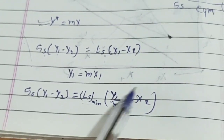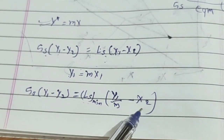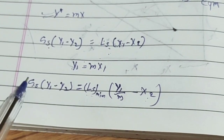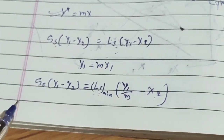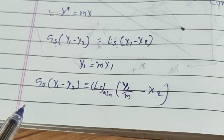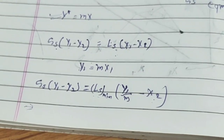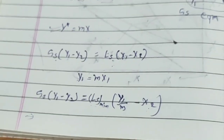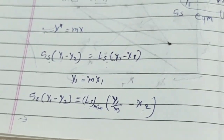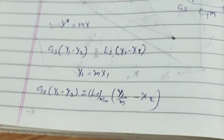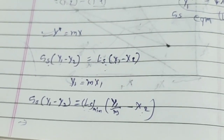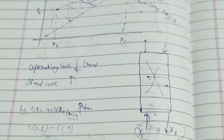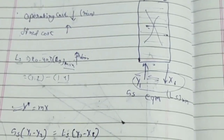Using that relationship you can find LS minimum. Most problems state that the solvent is pure, so X2 becomes zero, making the calculation even simpler. There will be a GATE exam question on screen for you to practice calculating LS minimum.